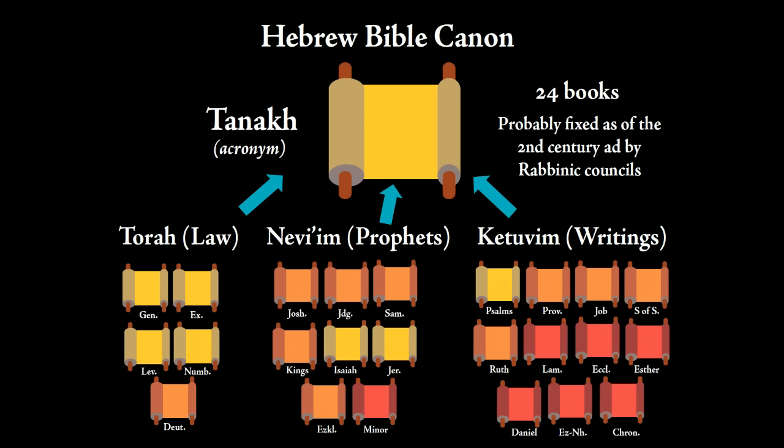There's an acronym, Tanakh, made from Torah, Nevi'im, and Ketuvim — law, prophets, and writings — and that's also how they're organized. The Torah, which Christians call the Pentateuch or the five books attributed to Moses: Genesis, Exodus, Leviticus, Numbers, and Deuteronomy. Then the prophets: Joshua, Judges, Samuel, Kings, Isaiah, Jeremiah, Ezekiel, and the twelve minor prophets grouped together. And finally the writings: Psalms, Proverbs, Job, Song of Solomon, down to Chronicles.